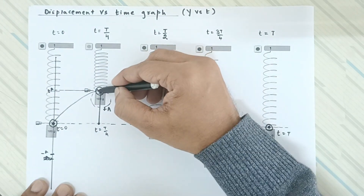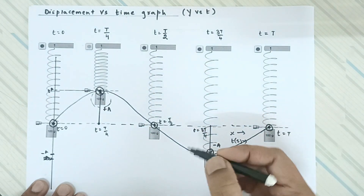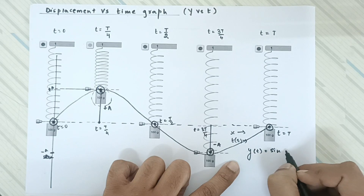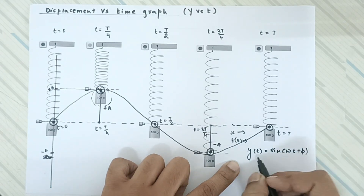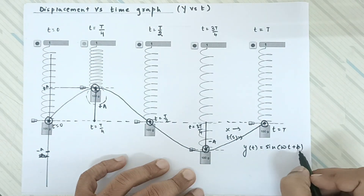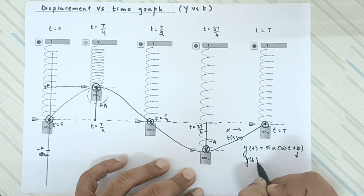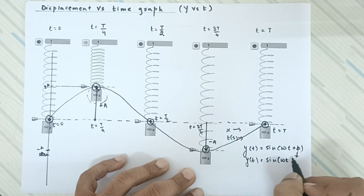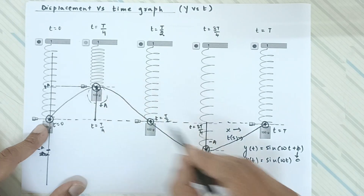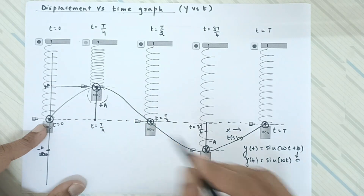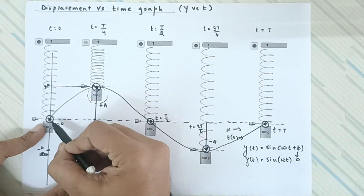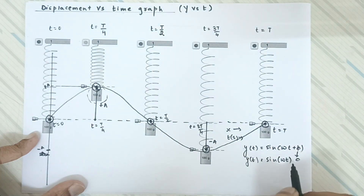Joining all these points gives a sinusoidal graph, because the displacement as a function of time is given by x = A sin(ωt + φ). So the displacement-time graph is a sinusoidal function. The term φ is the initial phase. Here φ = 0 because the oscillations start from the mean position. In upcoming videos I will explain the different values of φ for different starting positions of the oscillator.